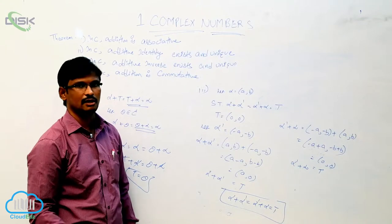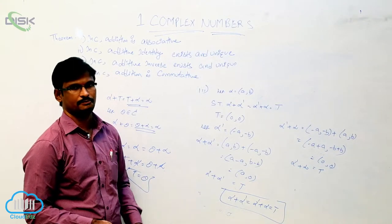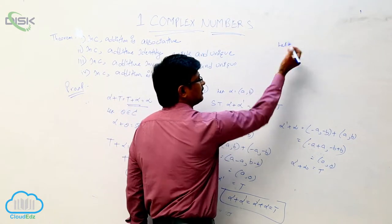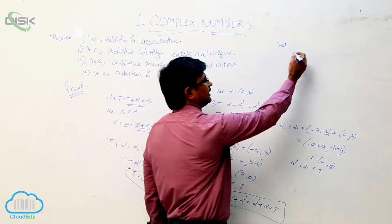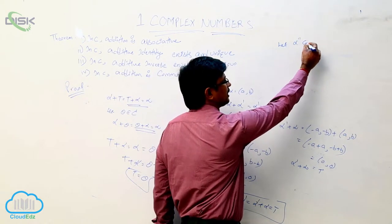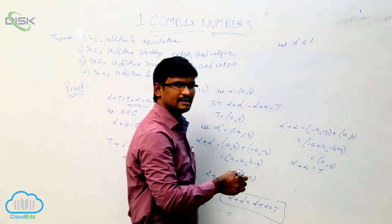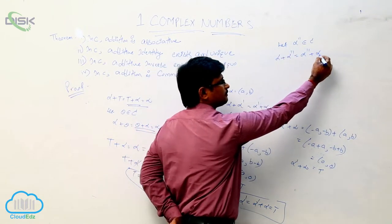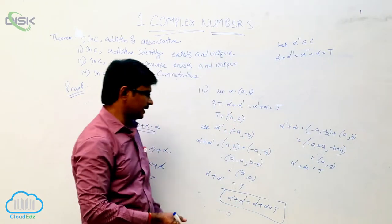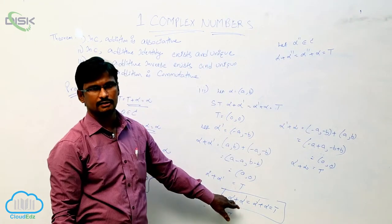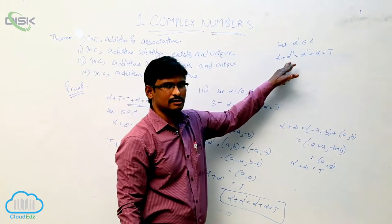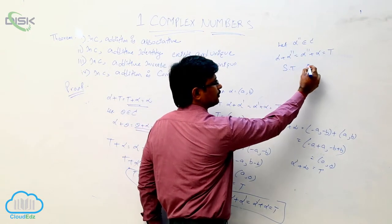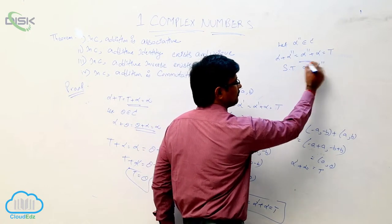Now we will prove the uniqueness of the additive inverse. Let one more element alpha_double_dash belonging to the complex numbers which satisfies alpha plus alpha_double_dash equal to alpha_double_dash plus alpha equal to t. Here alpha_dash is an additive inverse, and alpha_double_dash is also an additive inverse. For proving uniqueness we have to prove that alpha_dash equal to alpha_double_dash.